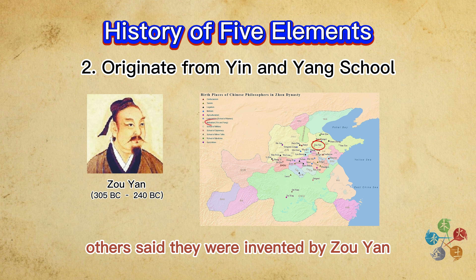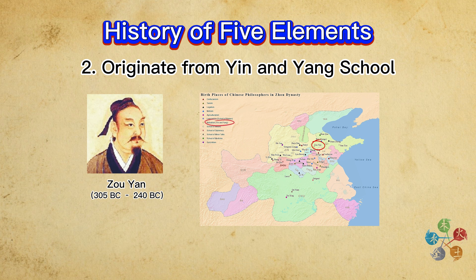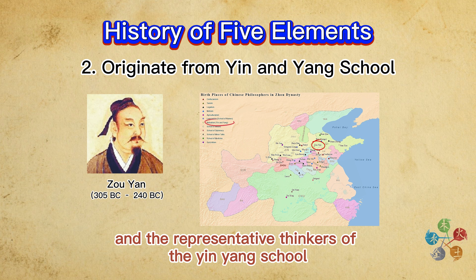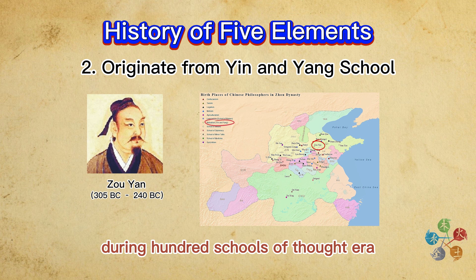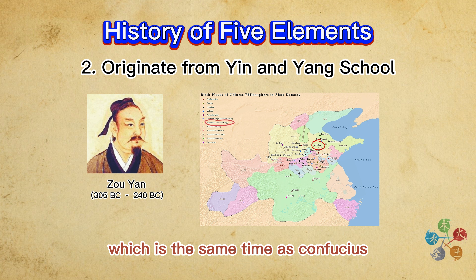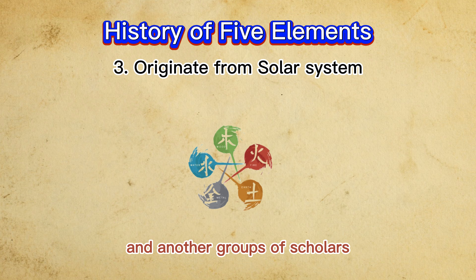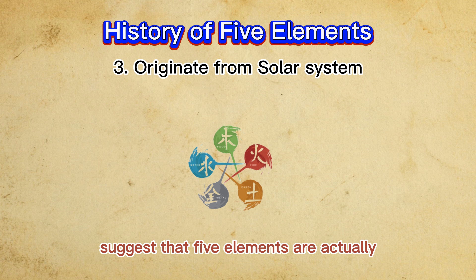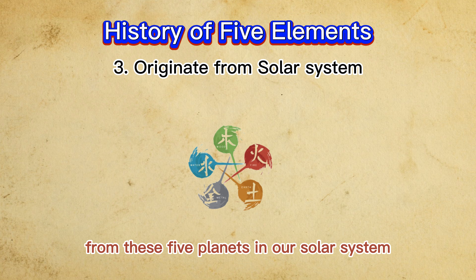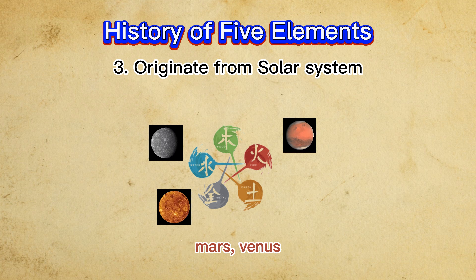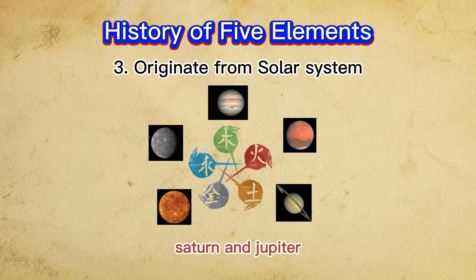Others said they were invented by Zhou Yan, one of the famous Chinese philosophers and representative thinkers of the Yin Yang school, during the Hundred Schools of Thought era, which is the same time as Confucius. Another group of scholars suggests that five elements are actually from five planets in our solar system: Mercury, Mars, Venus, Saturn, and Jupiter.